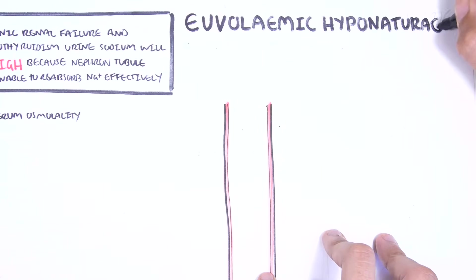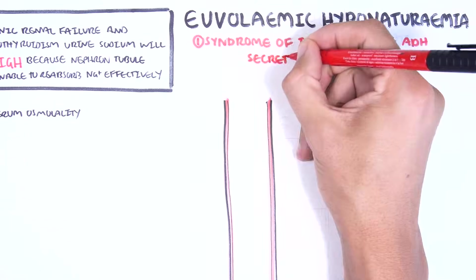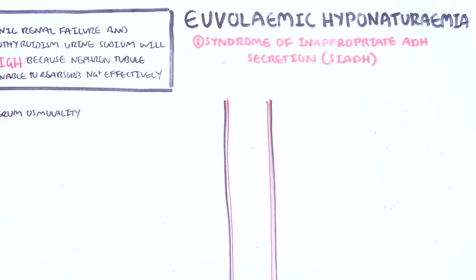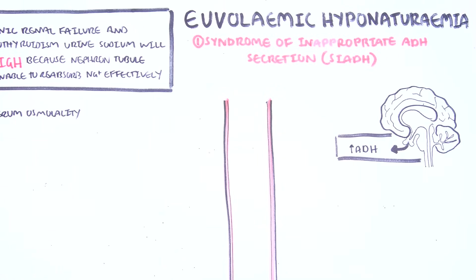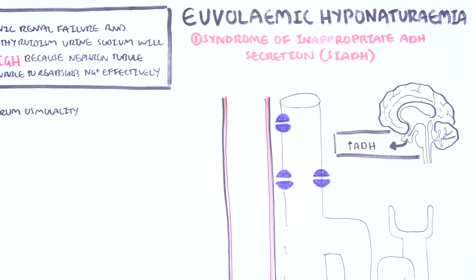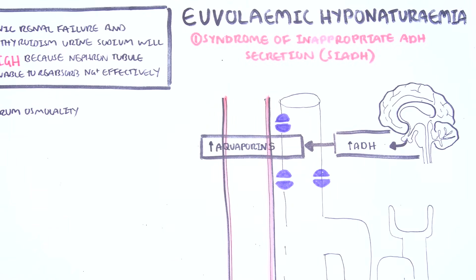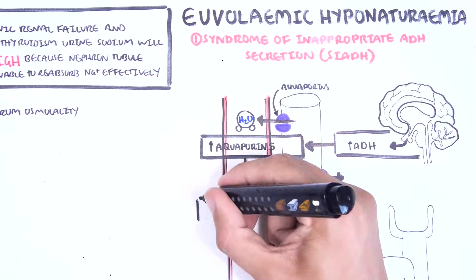The most common cause of euvolemic hyponatremia is syndrome of inappropriate ADH secretion (SIADH). SIADH is a non-physiological release of antidiuretic hormone from the posterior pituitary or from an ectopic source. ADH works by increasing the expression of aquaporins in the collecting ducts of the kidneys, so with inappropriate secretion of ADH there will be a lot of aquaporins, meaning a lot of water retention.